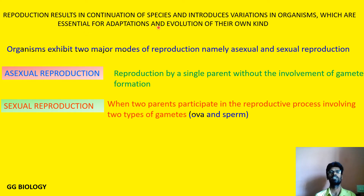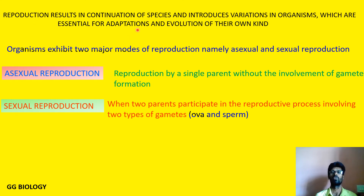Reproduction results in continuation of species and introduces variations in organisms. This brings variations in organisms, and these are essential for adaptations and evolution of their own kind. So reproduction is nothing but producing young ones to maintain their species or to maintain their race.